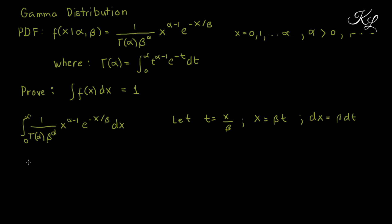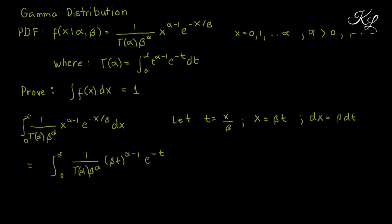Now let's apply the transformation. The integral goes from 0 to infinity — if x equals 0 then t equals 0, and if x is infinity then t is also infinity. Copying the constants: 1 over gamma of alpha times beta raised to alpha, then x becomes beta times t raised to alpha minus 1, e raised to negative t, and dx becomes beta dt.